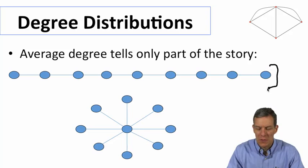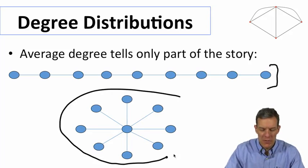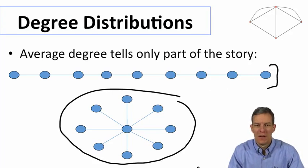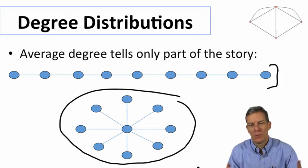For instance, whether everybody has one or two links or some nodes have eight and others have one, that's going to give us a very different kind of network with different properties in terms of its diffusion properties, its path lengths, and other kinds of things.